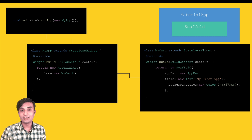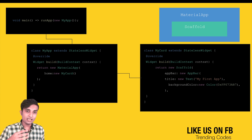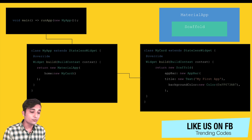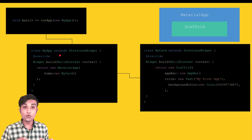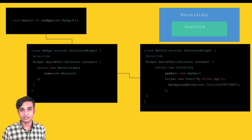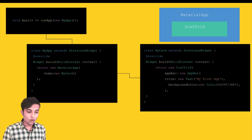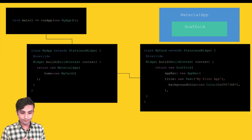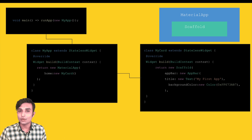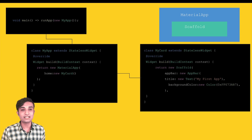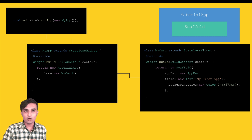As I mentioned, we need a MaterialApp and inside it a Scaffold. Inside the MyApp class we use MaterialApp, which has a home property. Home is the root page — it's the first page displayed when you run your app. The home is set to a new instance of MyCard. The MyCard class also extends StatelessWidget, and as I said, every class should override the build method.